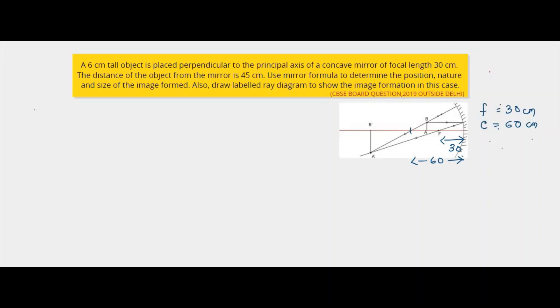Then we have the size of the object, 6 cm tall. So the object height is 6 cm and it is situated at a distance of 45 cm from the mirror. So the object distance is 45 cm.